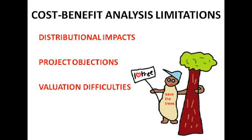Cost-benefit analysis limitations. The first is distributional impacts — CBA tends to look at local impacts and won't consider what happens elsewhere, like in Africa, if we build a new factory. Project objections are another issue — even if CBA says go ahead, you might face objections from pressure groups, especially environmental ones. Valuation difficulties are a major limitation — it's very hard to place a monetary value on the environment or human life. Shadow prices are inherently subjective.